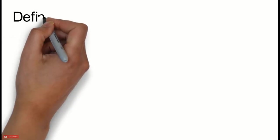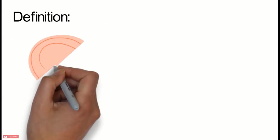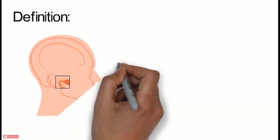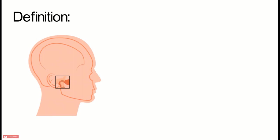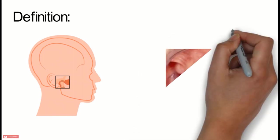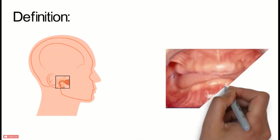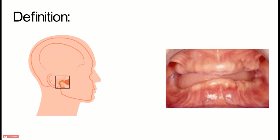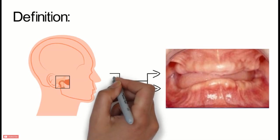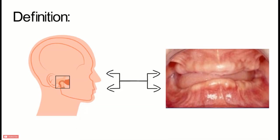Jaw relation, also known as maxillomandibular relationship, is defined as any spatial relationship of the maxilla to the mandible, any one of the infinite relationships of the mandible to the maxilla. Jaw relation record is defined as a registration of any positional relationship of the mandible relative to the maxilla.